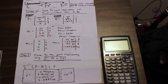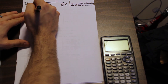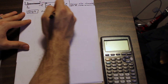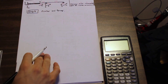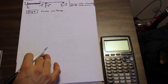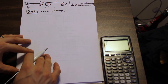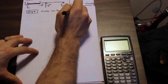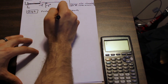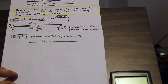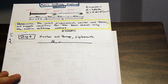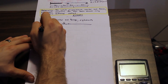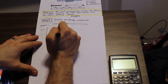Step six is finding the member end forces. The formula is q equals k times u plus qf, where u is the member end displacement vector. Finding u is straightforward — from the displacement vector D we extract values corresponding to code numbers for each member.